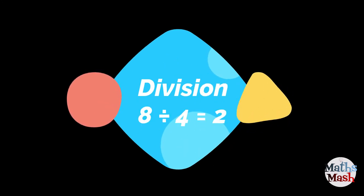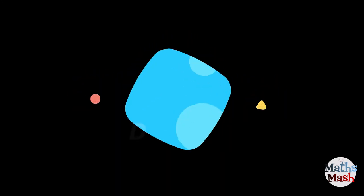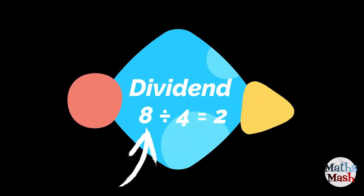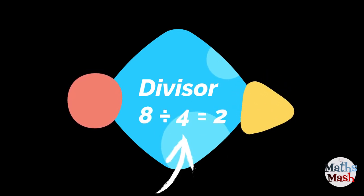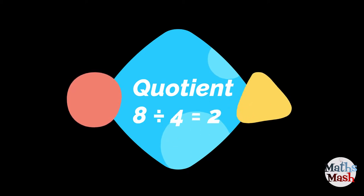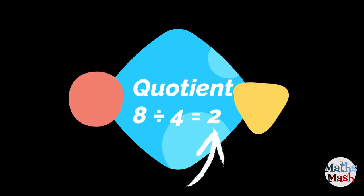Here's our vocabulary. Division. There's an example of a division question. Dividend is the number that comes at the beginning of a division question. Divisor is the number that comes after the division symbol. And quotient is the number that is usually referred to as the answer.